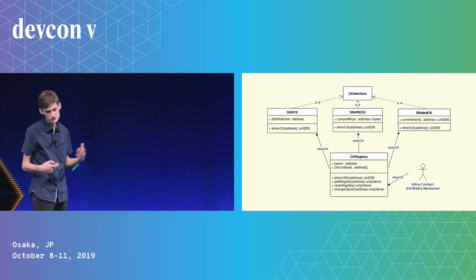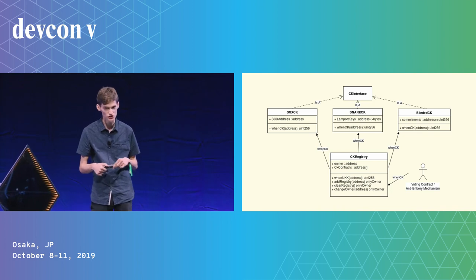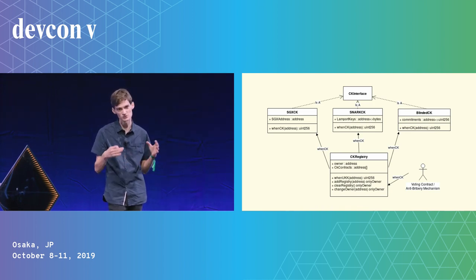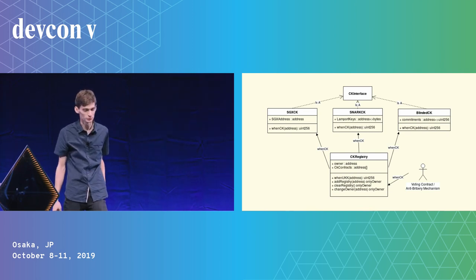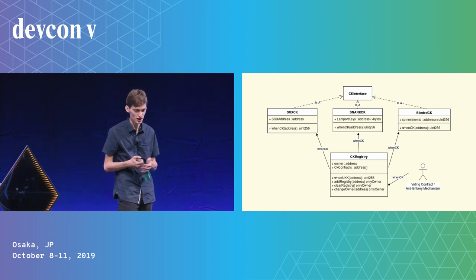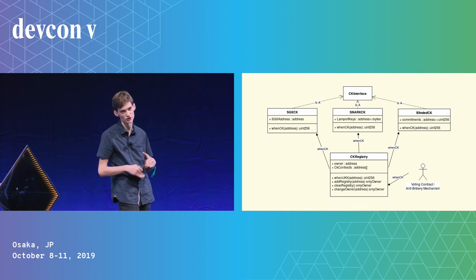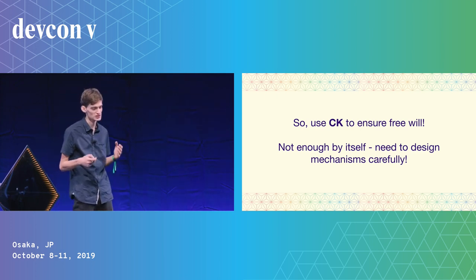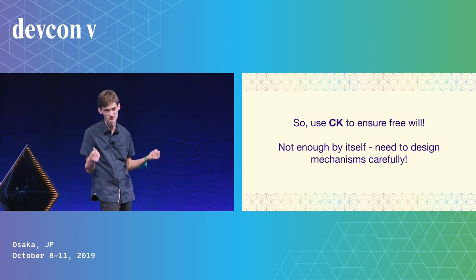We're releasing this system on Ethereum. In your voting contract or anti-bribery mechanism, you just call a single function on our registry — whenCK — which tells you the last time a complete knowledge proof was generated on some key, proving that a user actually can learn their key. Users can choose between SGX or Bitcoin ASIC backends. Interestingly, this also lets us recycle old Bitcoin ASICs — even those no longer profitable for mining are still much faster than CPUs and can generate these proofs.